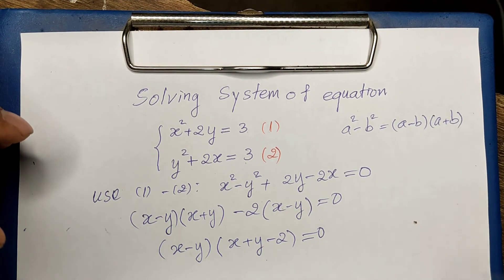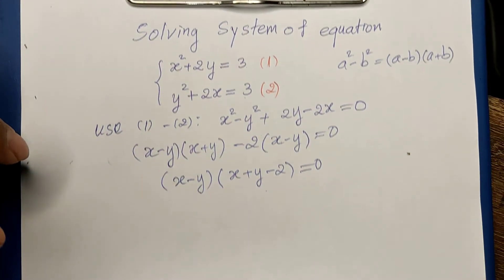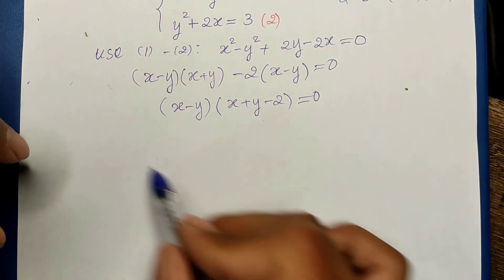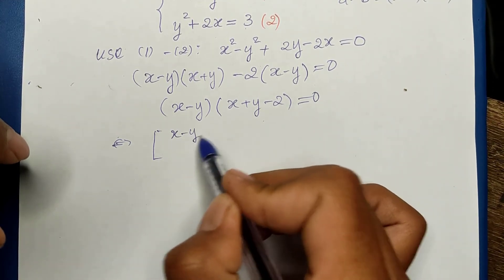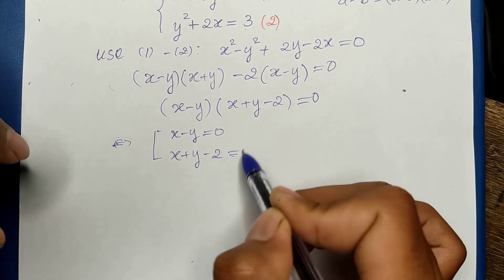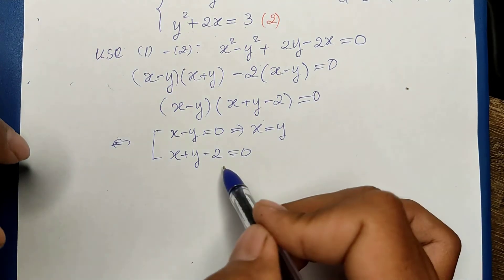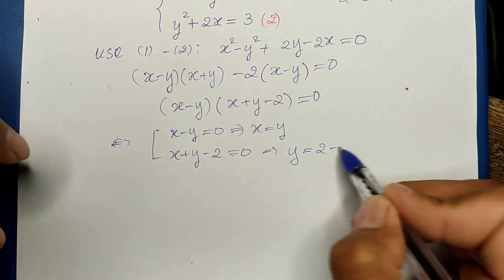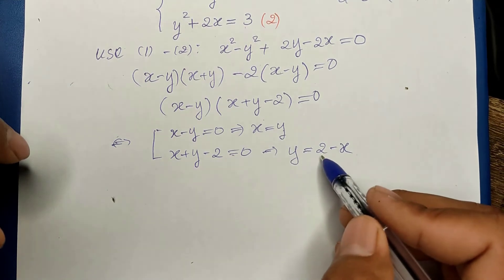Since we have two factors equal to zero, each factor can equal zero. So either x minus y equals zero, giving x equals y, or x plus y minus 2 equals zero, giving y equals 2 minus x. From the first factor we get x equals y, and from the second we get y equals minus x plus 2, or as stated: y equals minus x.